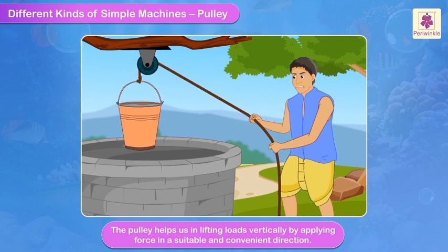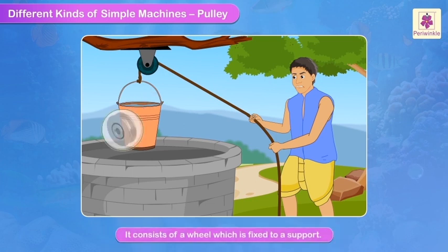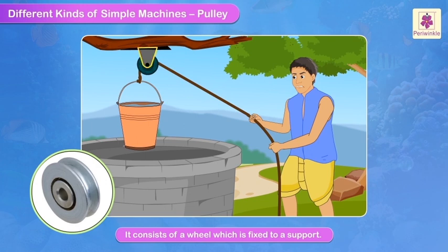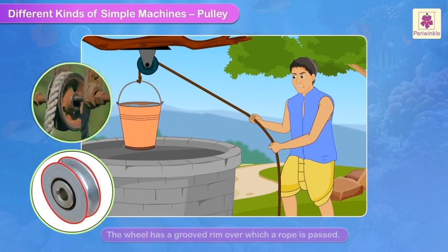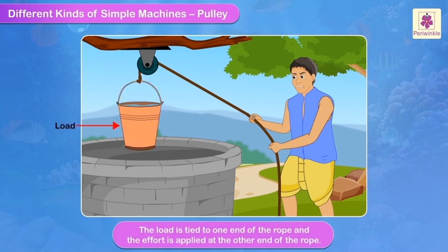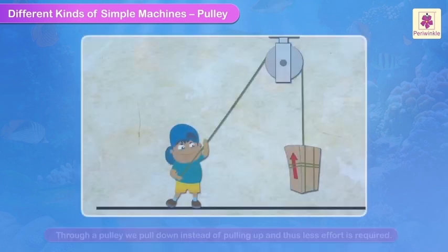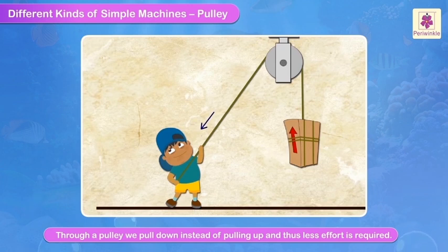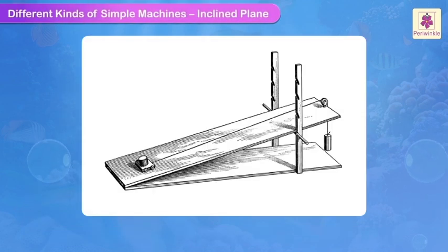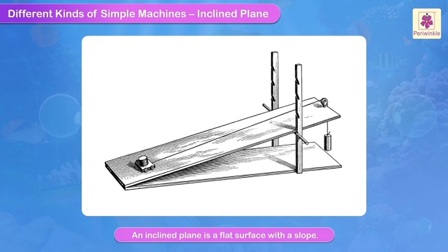Pulley. The pulley helps us in lifting loads vertically by applying force in a suitable and convenient direction. It consists of a wheel which is fixed to a support. The wheel has a grooved rim over which a rope is passed. The load is tied to one end of the rope and the effort is applied at the other end. It is very difficult to lift a weight upwards against the force of gravity, but through a pulley we pull down instead of pulling up, and thus less effort is required.